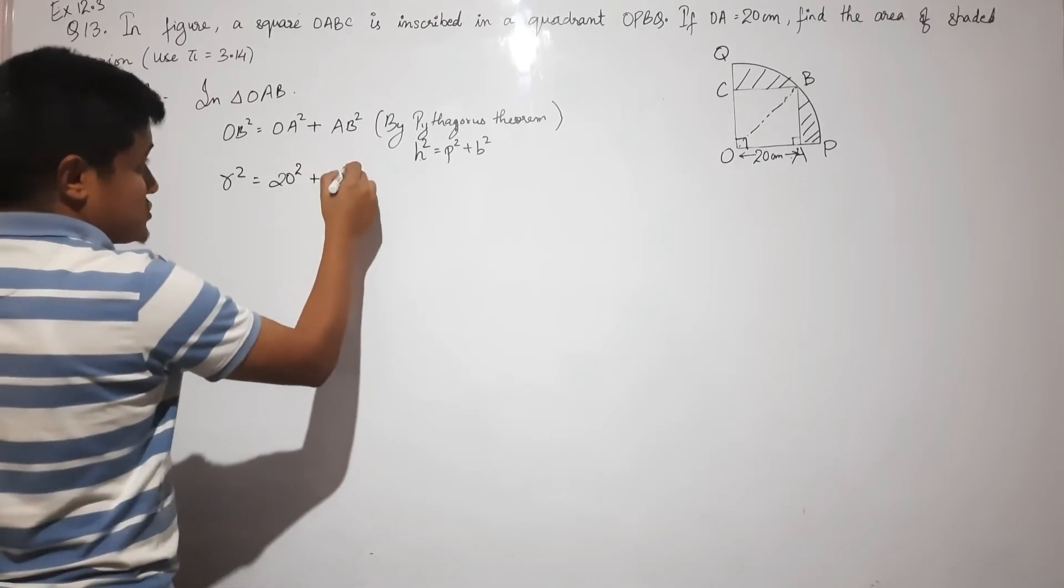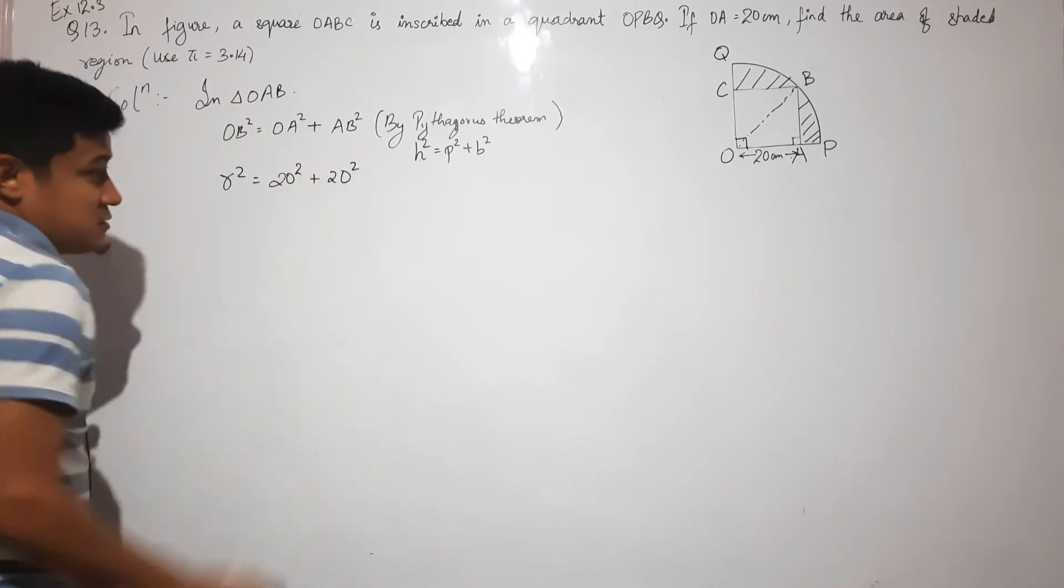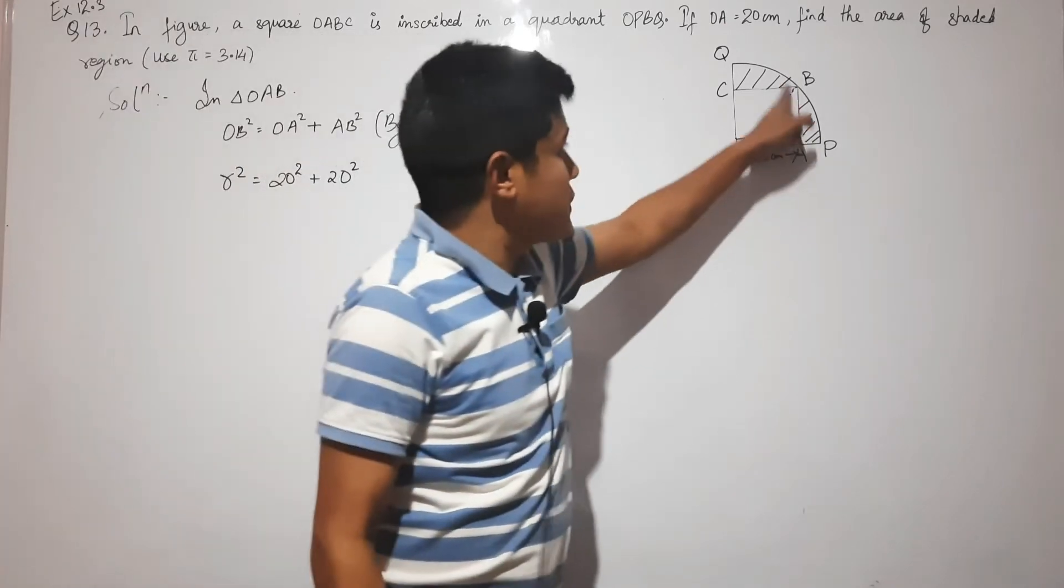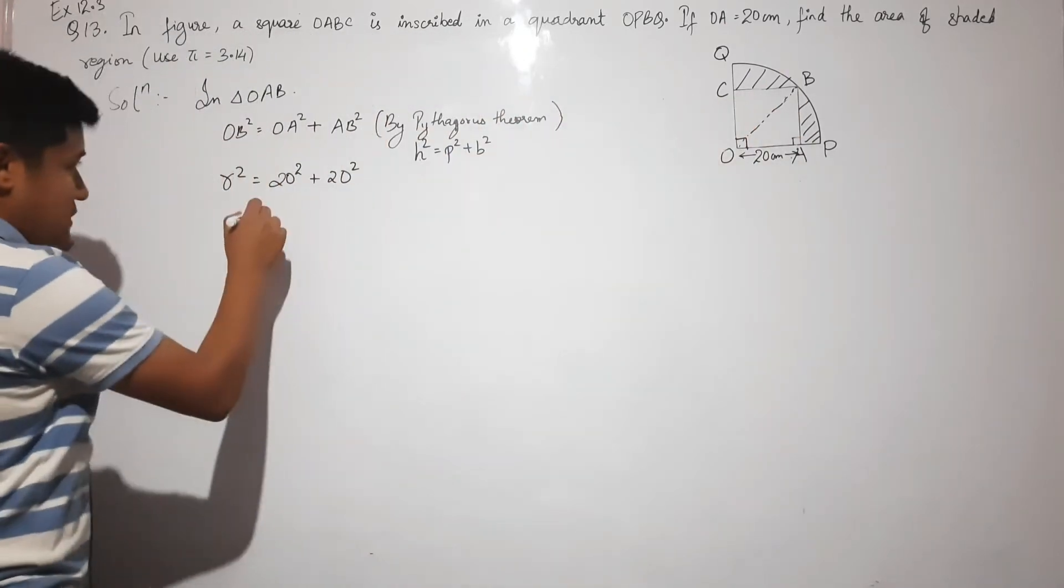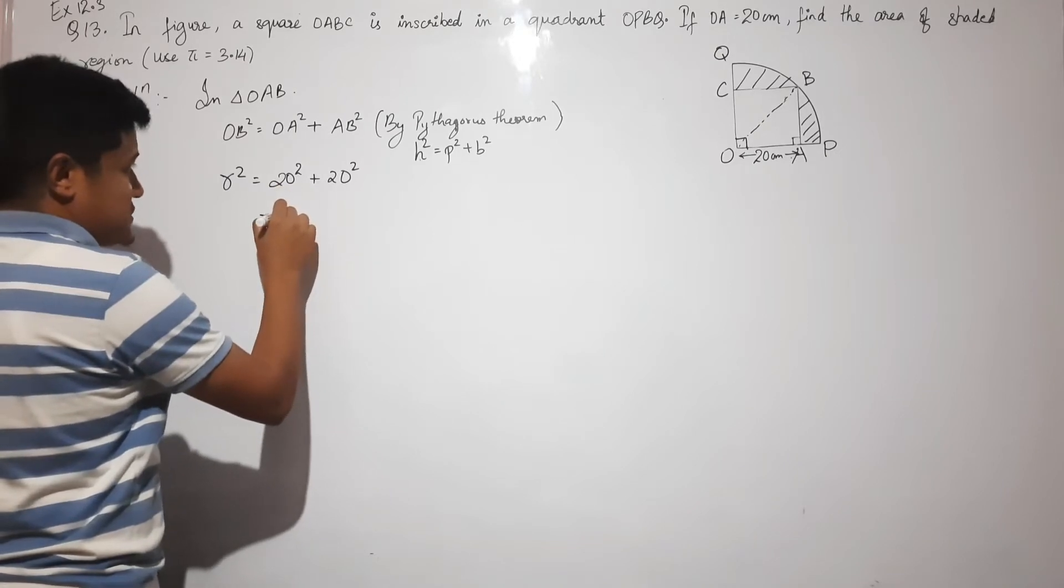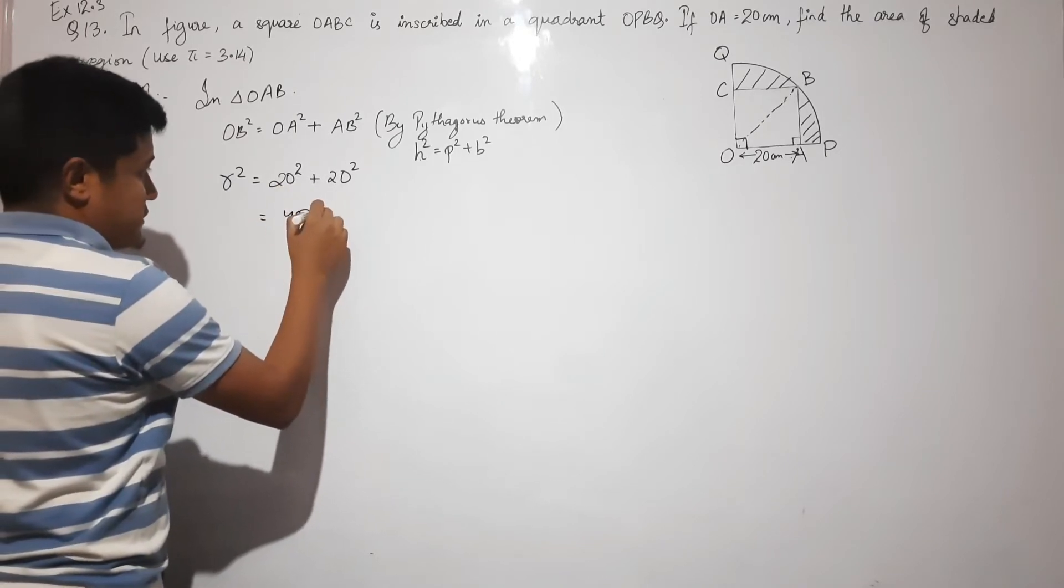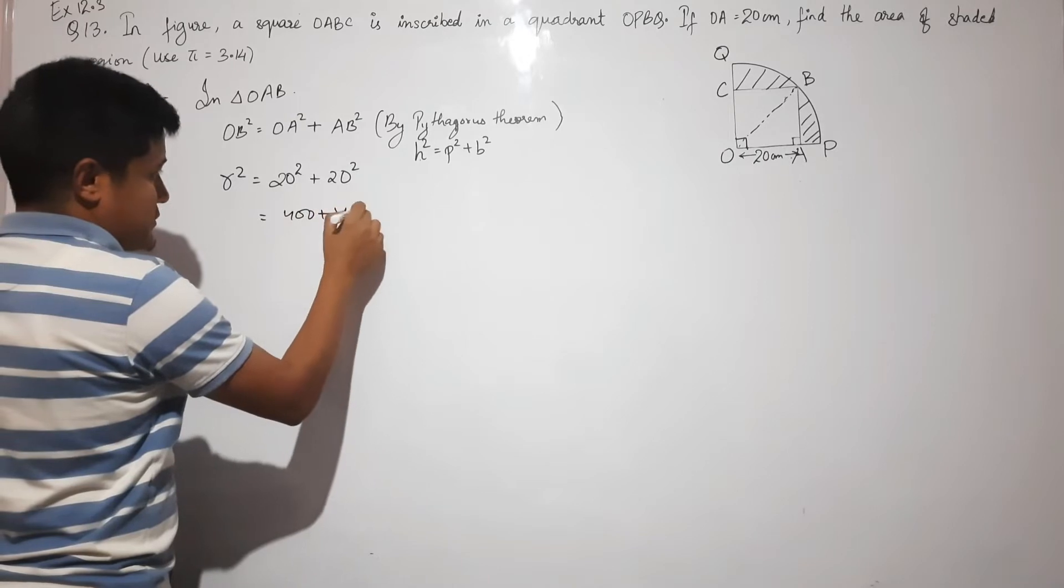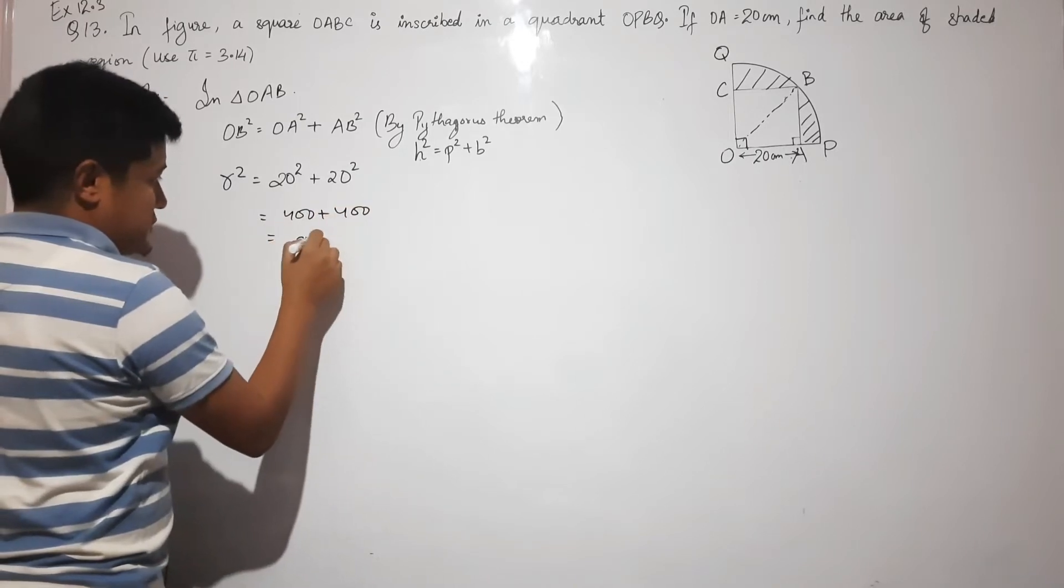So it will be 20 squared which is 400, plus 20 squared which is 400, giving us 800.